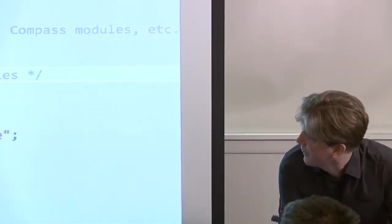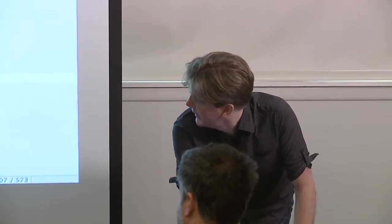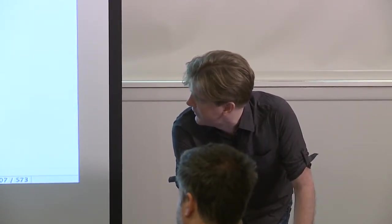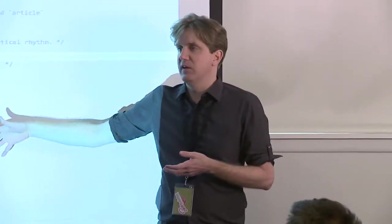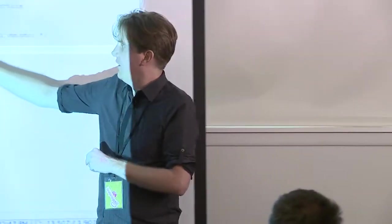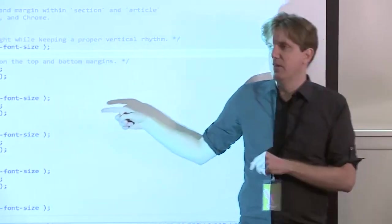Does the normalized file take into account vertical rhythm? It does — that's part of the port I did from regular CSS to the Compass version. I usually go to my repo, grab a copy through Bower or whatever, and then just start hacking at it to make it mine. We have some variables for font sizes set in the init partial.